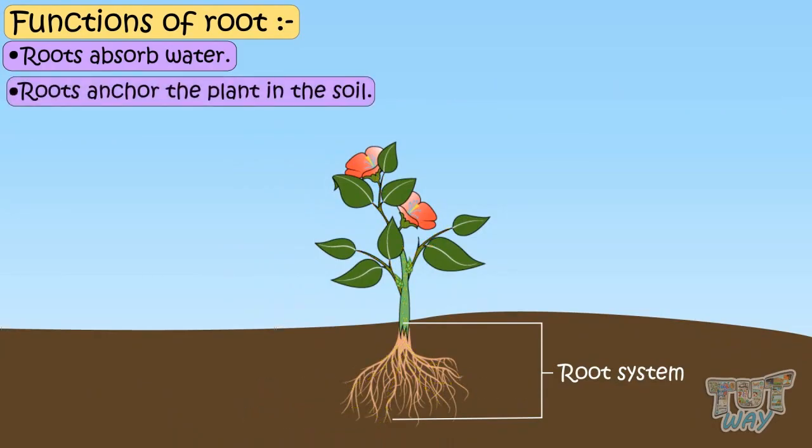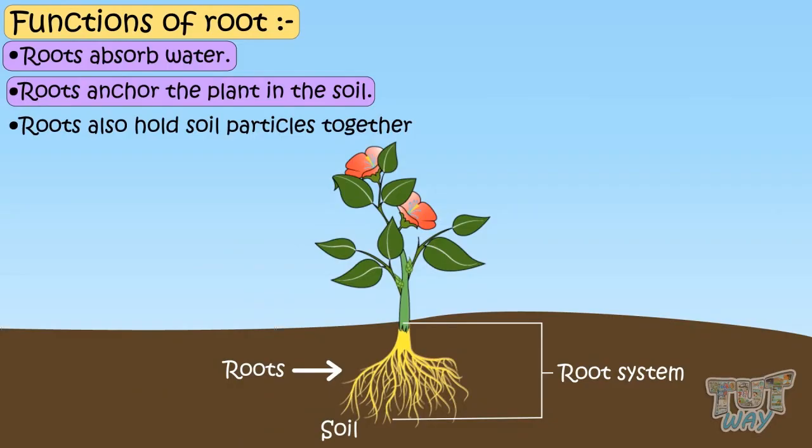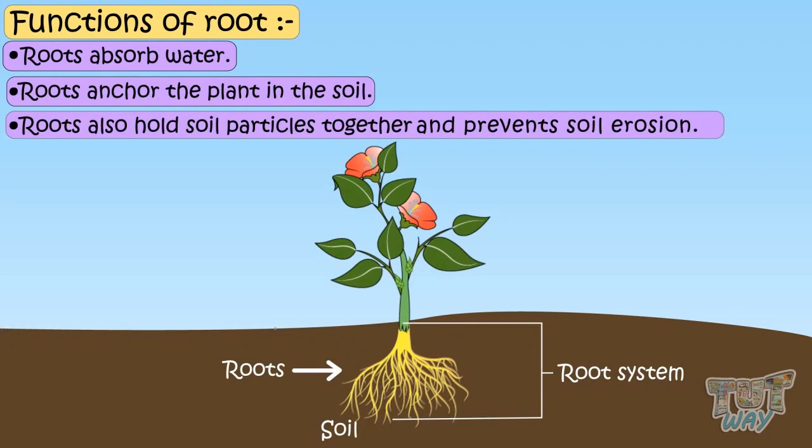Roots anchor the plant, that is, root fix the plants into the soil. Roots also hold soil particles together, that prevents the soil from being washed away with rain or storm. So roots are the support system of the plant.